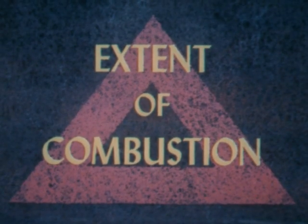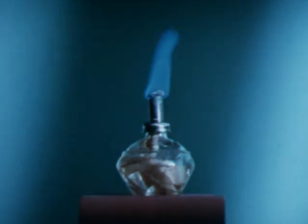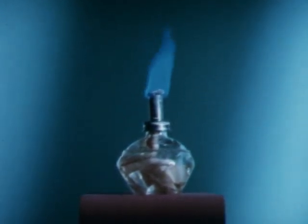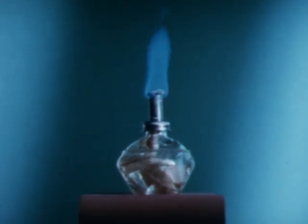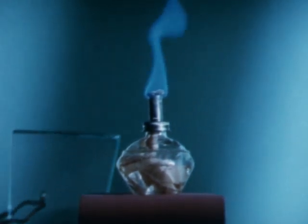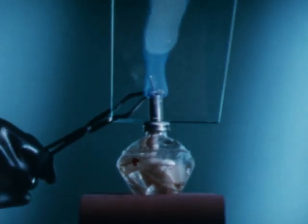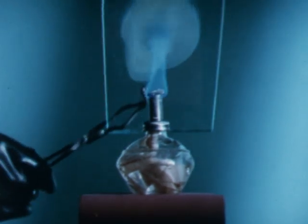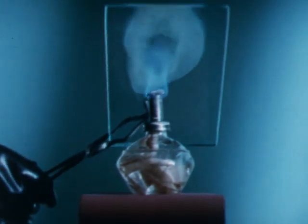Next, extent of combustion will be examined. Combustion of a fuel can be complete or partial. As an example of complete combustion, carbon disulfide burns to form gaseous carbon dioxide and sulfur dioxide. Partial combustion results when the flame is chilled by a piece of glass. Unburned sulfur is deposited on the glass and invisible carbon dioxide escapes.